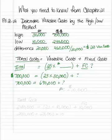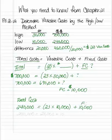You can check this with the total cost for the lowest month. $240,000 should equal $23 times 10,000 units plus $10,000 for fixed cost. Let's multiply it out and see.